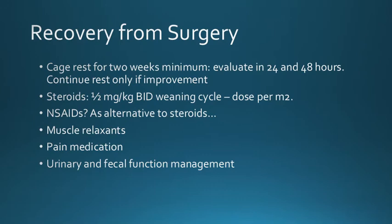Recovery from surgery: cage rest minimum 2 weeks; fractures require 4-6-8 weeks. Evaluate at 24-48 hours and continue rest only with improvement. Steroids at 0.5 mg/kg twice daily with weaning cycle; adjust surface area for larger dogs. NSAIDs are an option. Muscle relaxants as needed. Pain medication. Manage urinary and fecal function — catheters if needed; patients can go home if necessary. For neck disc herniation post-surgery, typically only methocarbamol and low-dose prednisone are needed — for nerve root inflammation and muscle spasm — for a few days.